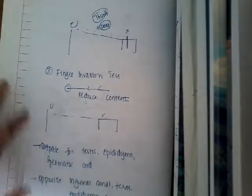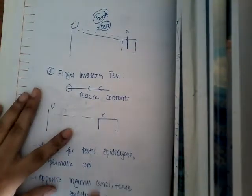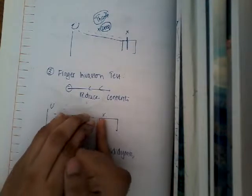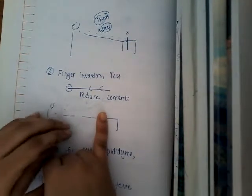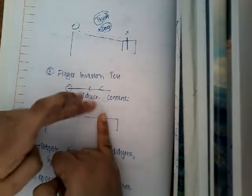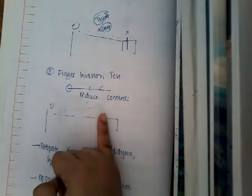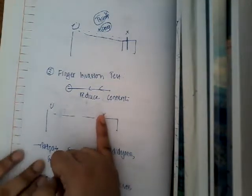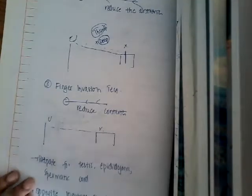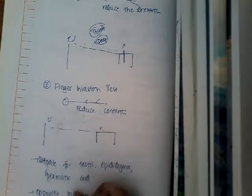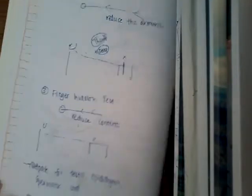The third test is the finger invagination test. Use your little finger — going below the scrotum — to invaginate up to the superficial inguinal ring, with the tip of the finger facing inward. If the swelling is felt on the pulp of the finger, that is direct inguinal hernia. Once all three tests are done, you can confirm it is a direct inguinal hernia.